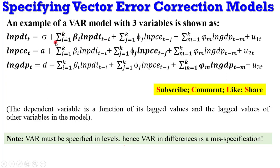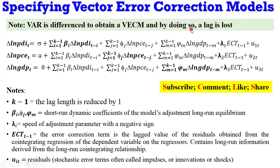Now let us see how a VECM is specified. On the screen is a VECM specification, and on observation you will see that the difference operators are applied in the model. The dependent variable has a difference operator, likewise the short-run coefficients. To obtain a VECM, you must difference a VAR, and by differencing a VAR you lose a lag. That is why the lag length here is k-1 across the entire system — unlike a VAR model where you have k lags, under a VECM it is k-1, so the lag length is reduced by 1.